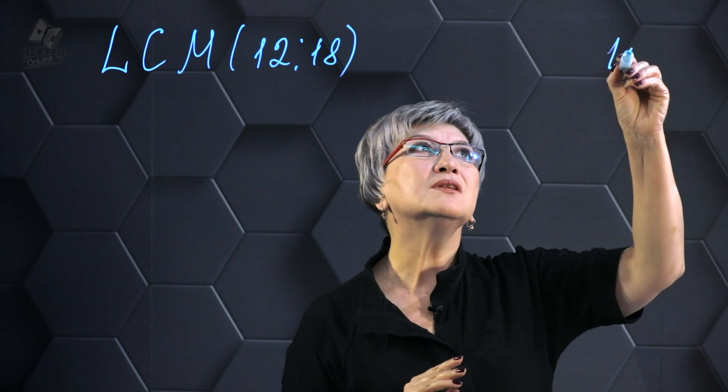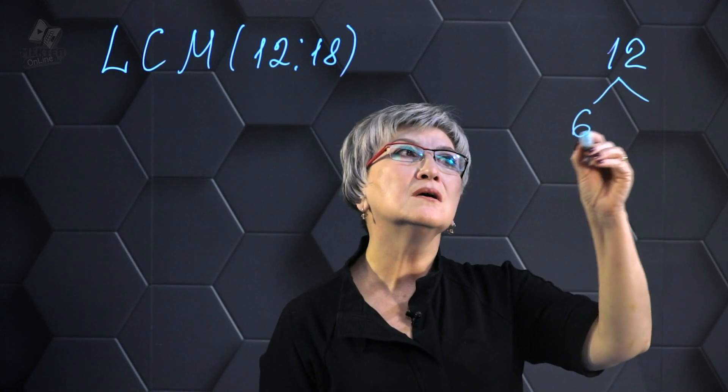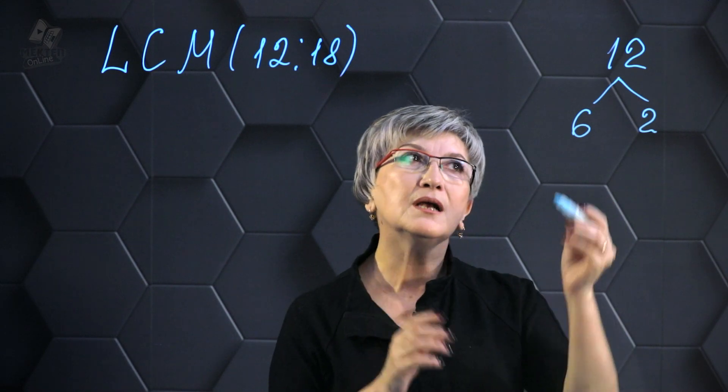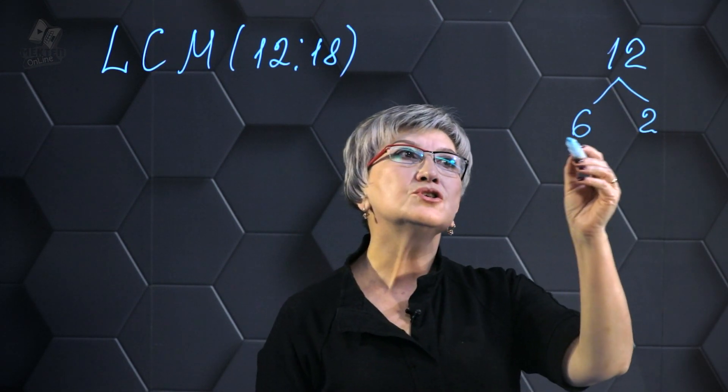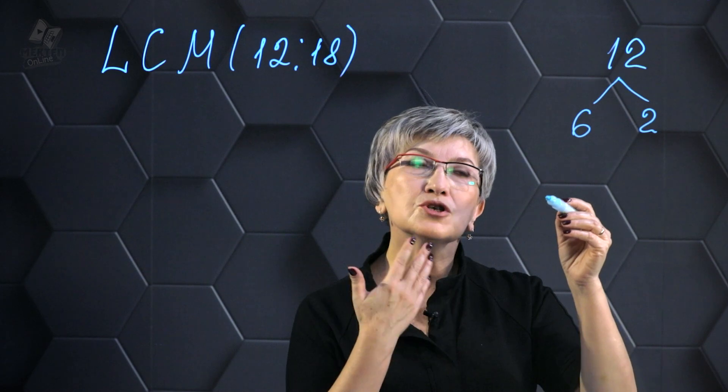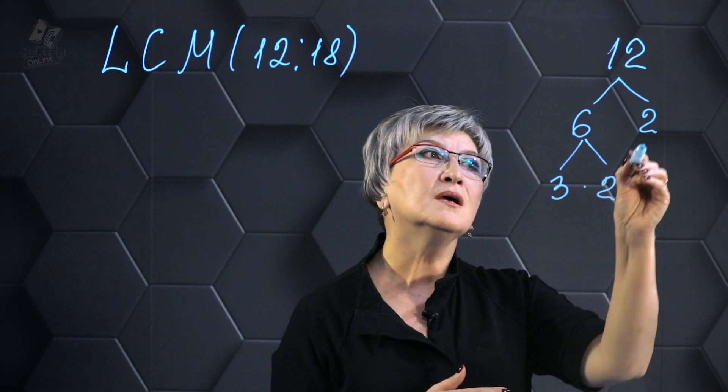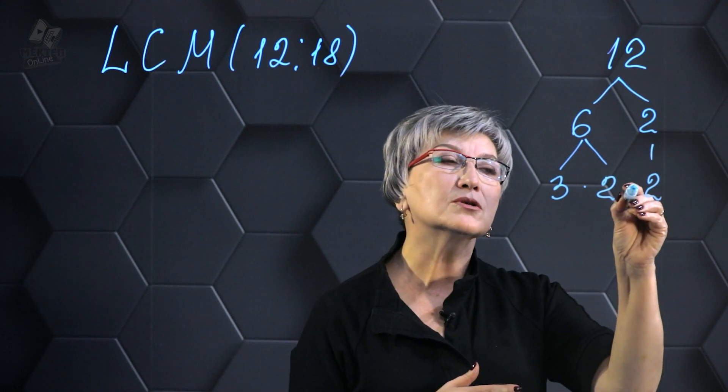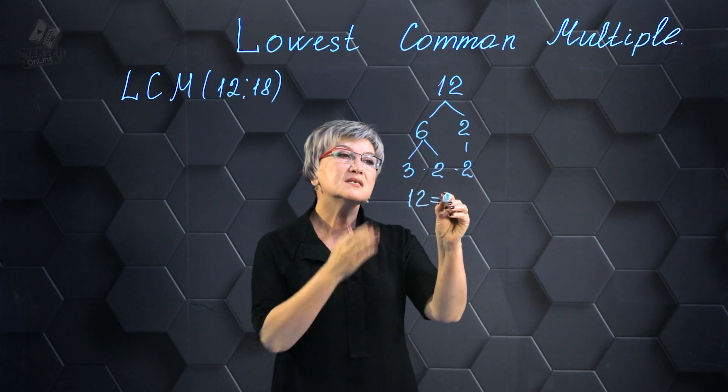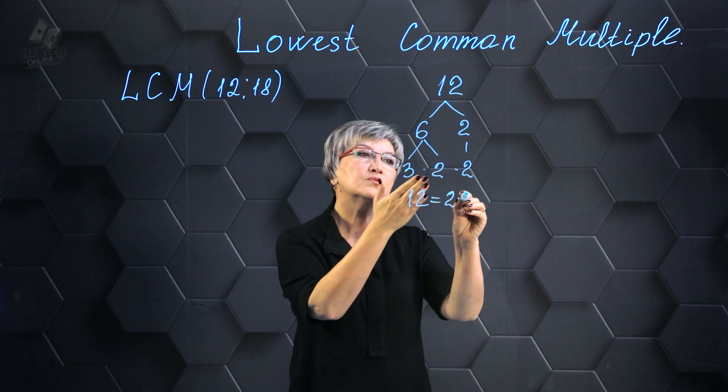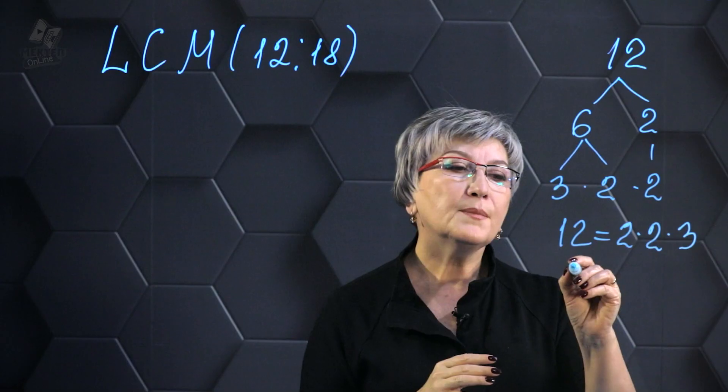So what I'm saying is, 12 equals 6 times 2. When multiplying 6 by 2 correctly, the result is 12. However, 6 can also be decomposed into 3 multiplied by 2. So it turns out that 12 is the product of 2 multiplied by 2 and then multiplied by 3. I always write numbers in order. Therefore, 12 can be expressed as 2 raised to the power of 2 multiplied by 3.